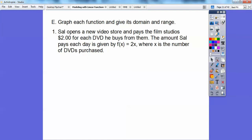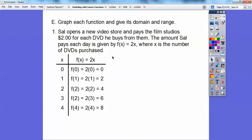Graph each function and give its domain and range. Sal opens a new video store and pays the film studios $2 for each DVD he buys from them. The amount Sal pays each day is given by f(x) equals 2x, where x is the number of DVDs purchased. So x is zero DVDs, one DVD, two DVDs, three and four. We multiply them by two.